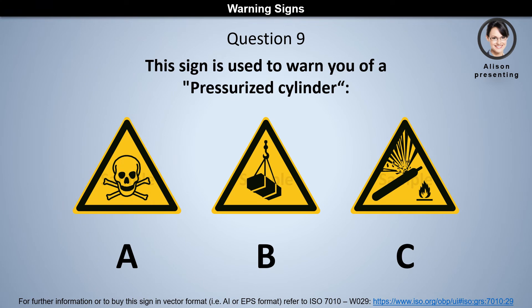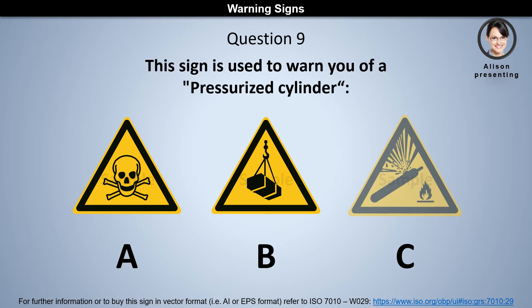Question 9. This sign is used to warn you of a pressurized cylinder. Is it A, B, or C? The answer is C.